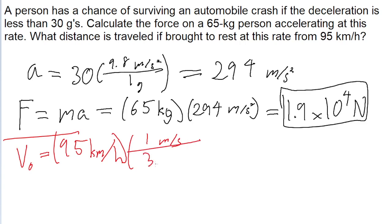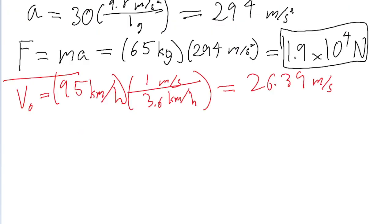So, 1 meter per second is equal to 3.6 kilometers per hour. So, divide 95 by 3.6, and we find an initial speed of 26.39 meters per second. So, that's the initial speed we actually want to be using.